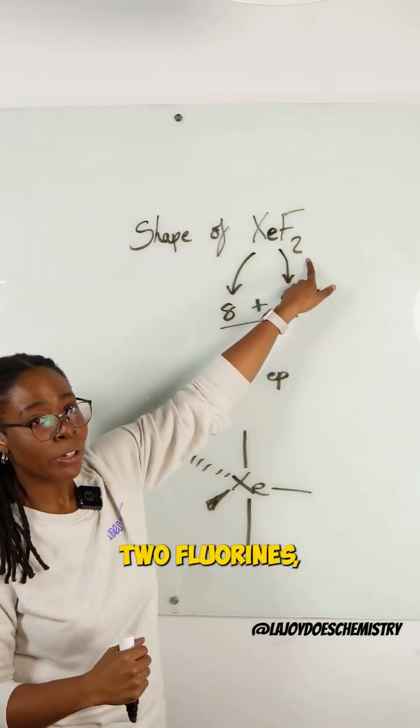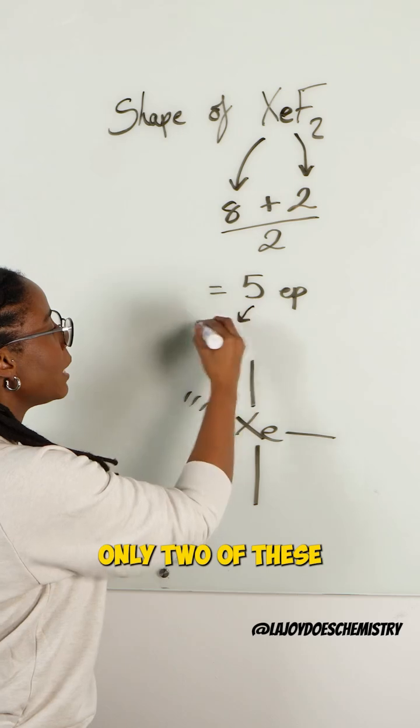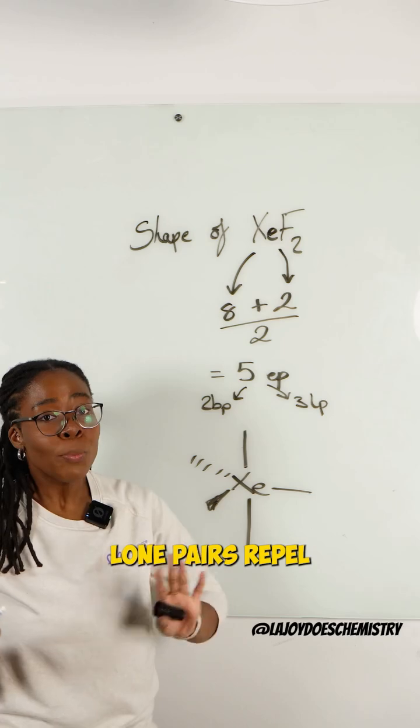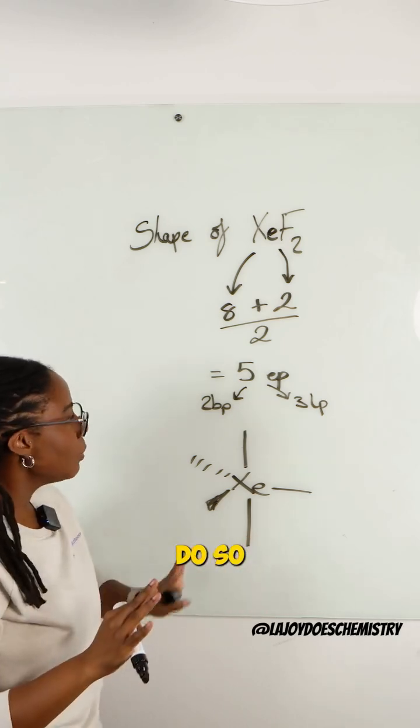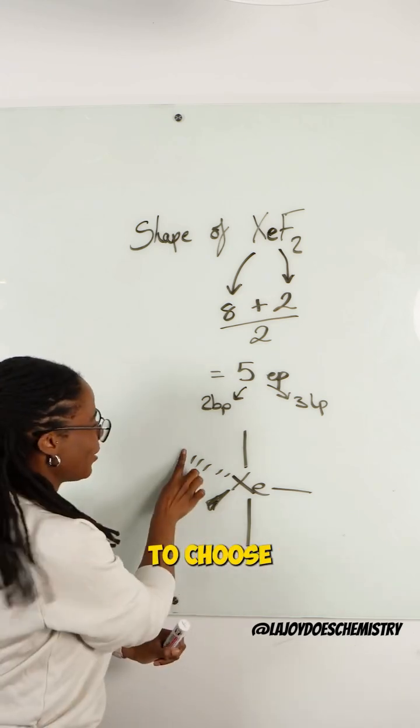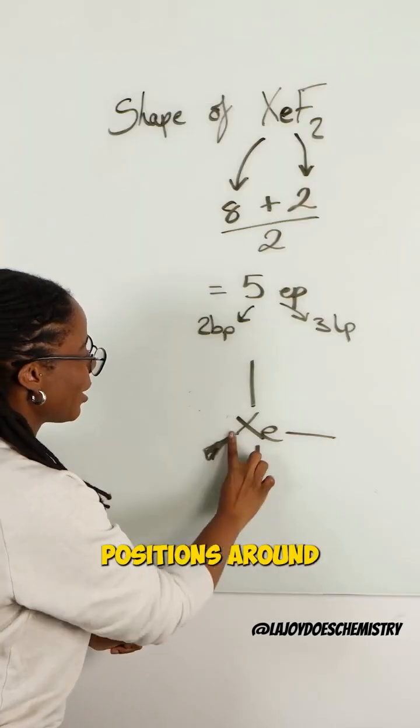But there are only two fluorines, which means that only two of these are bonding pairs, making the other three lone pairs. Lone pairs repel more than bonding pairs do. So in order to get them as far away from each other as possible, we are going to choose these three positions around the middle.